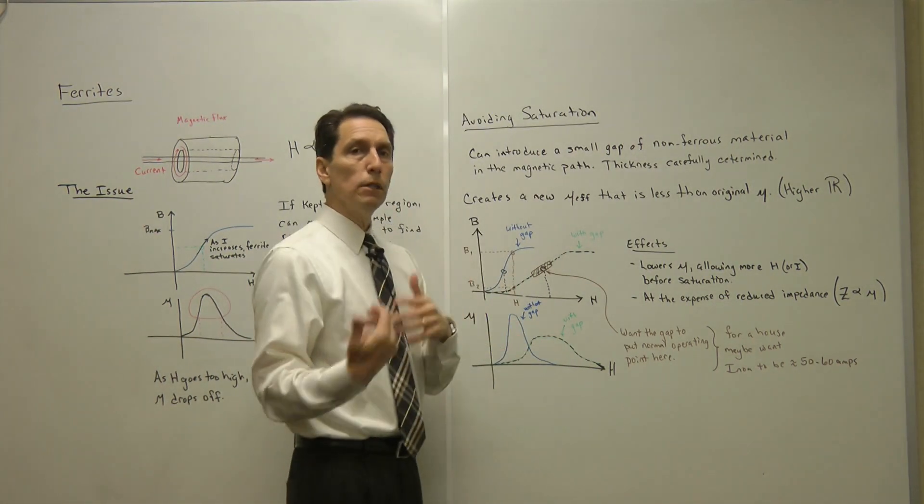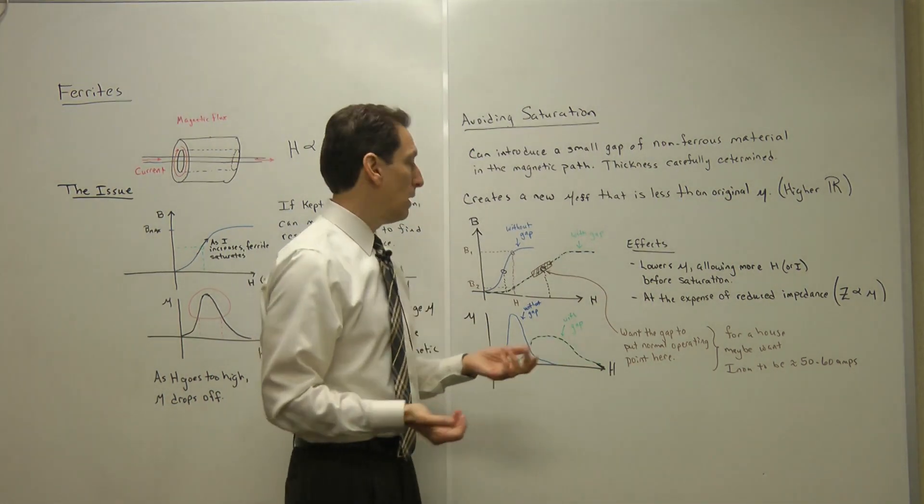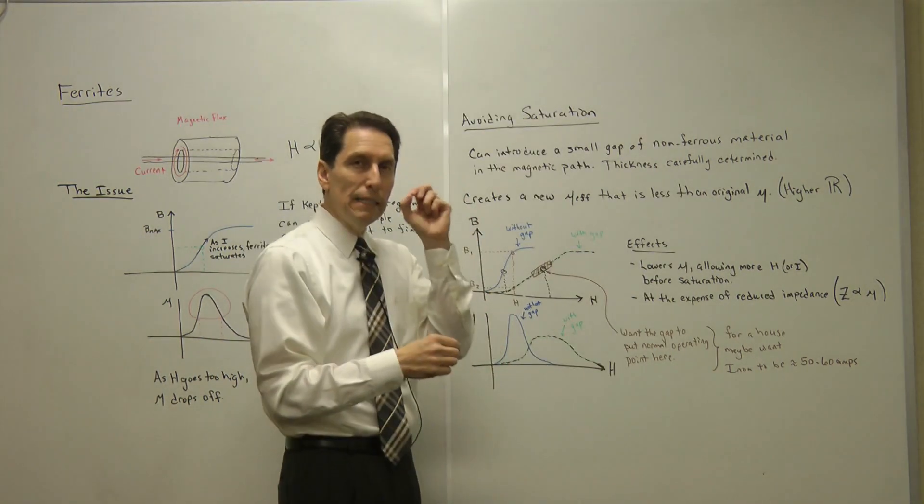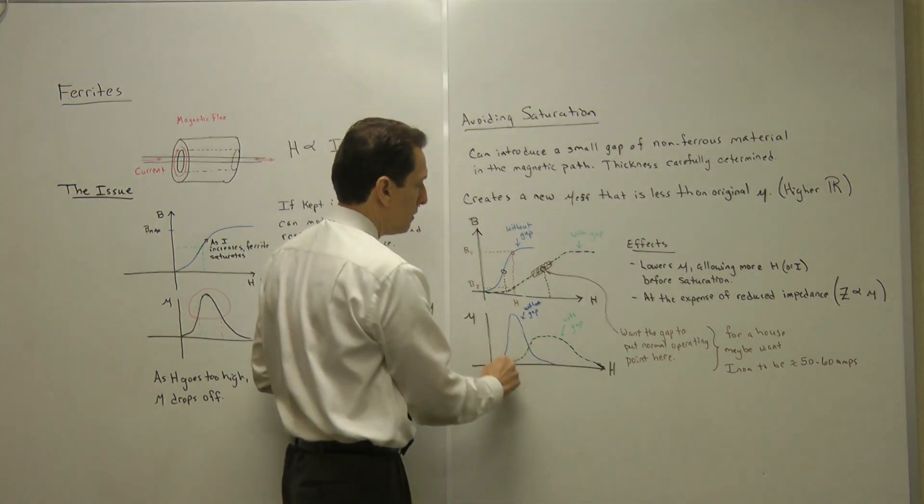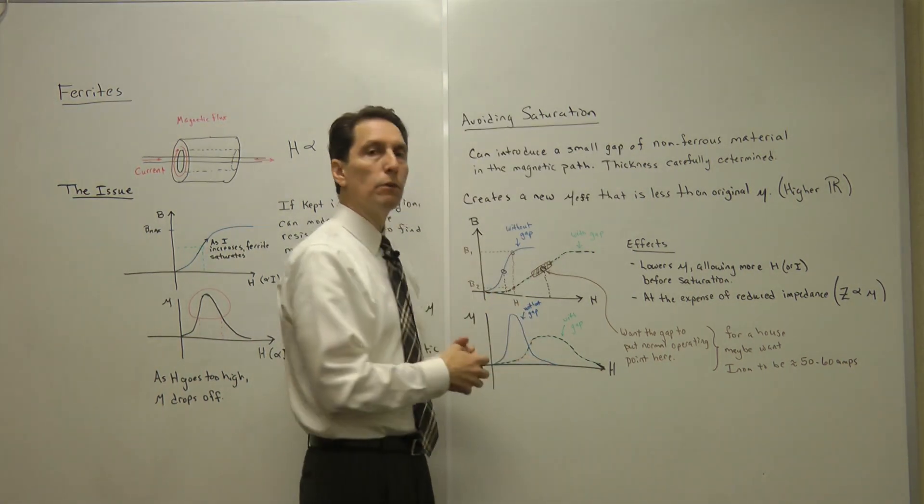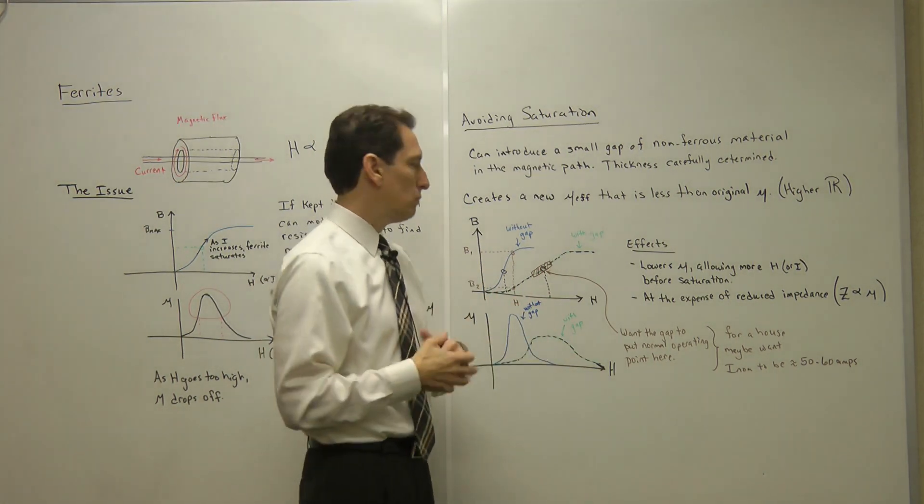If you pick too much current that you want to go through it, this curve moves way out, and the level drops so low that the ferrite is not effective. On the other hand, if you don't pick enough current as your operating point, and you introduce a tiny gap, it scoots back here and it's almost back to what it was before. Again, you have the problem of being out too far on the current curve, and you saturate. So it's a trade of how much gap do you introduce.